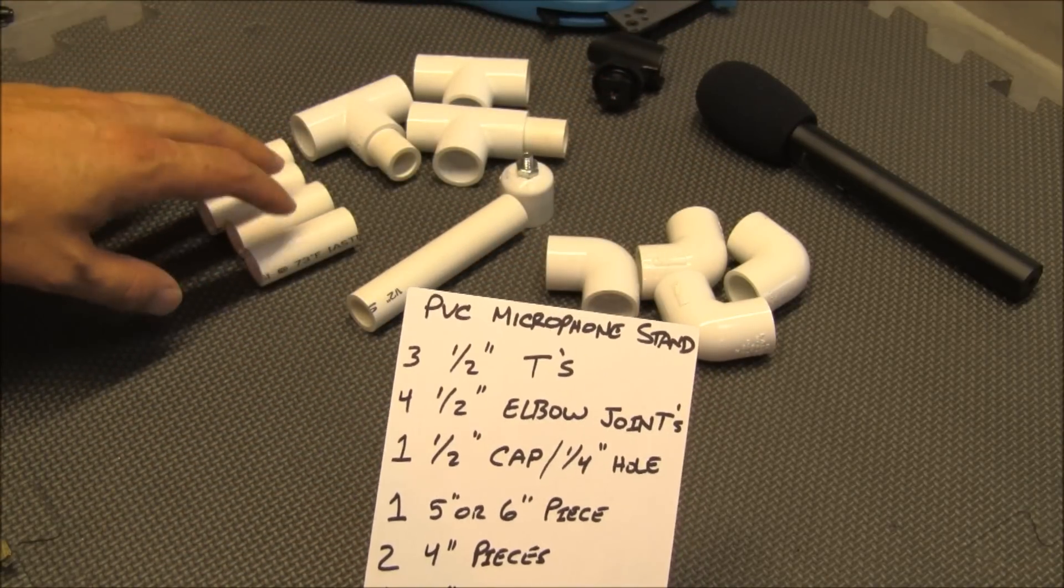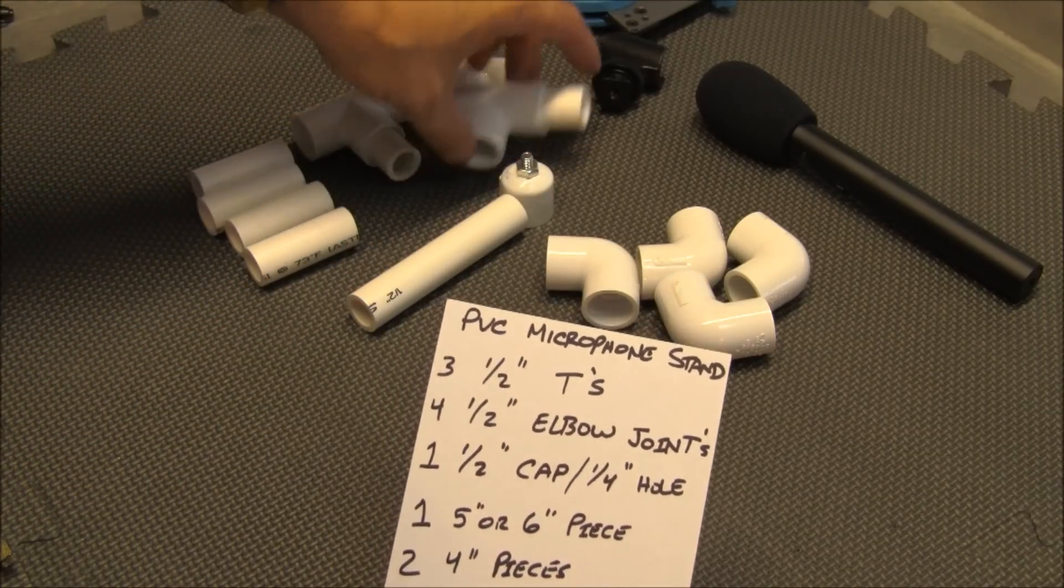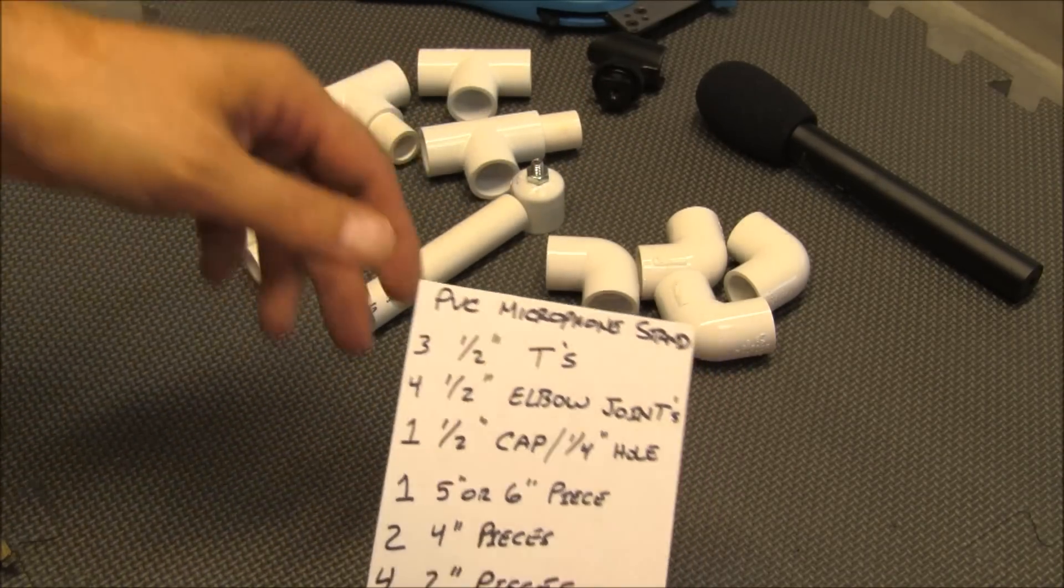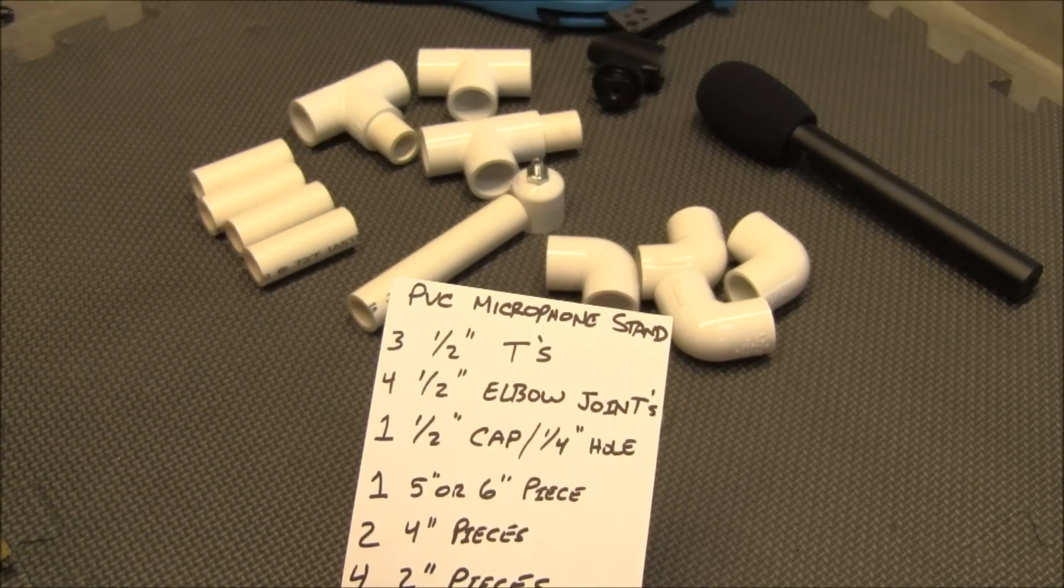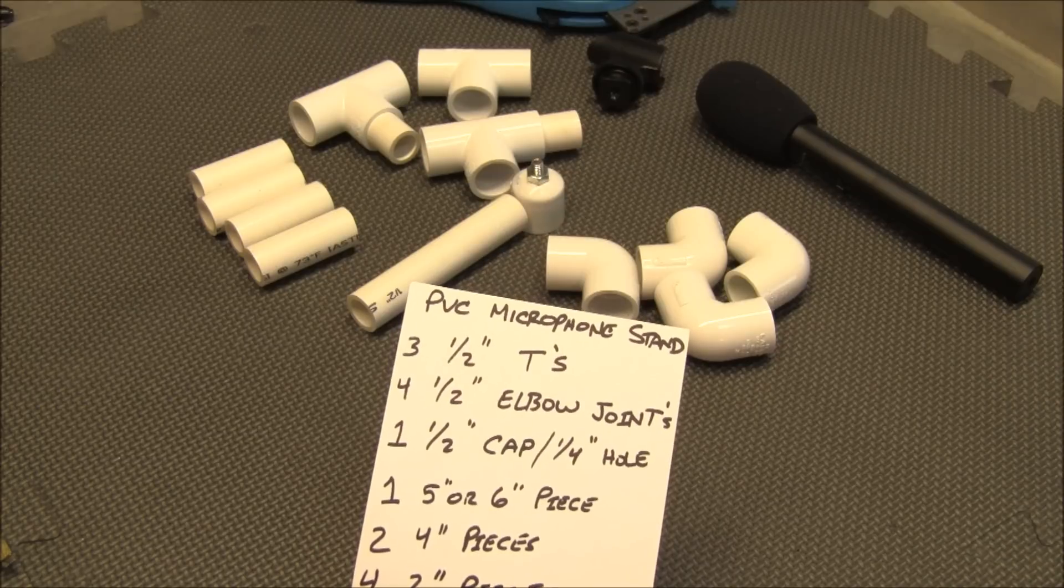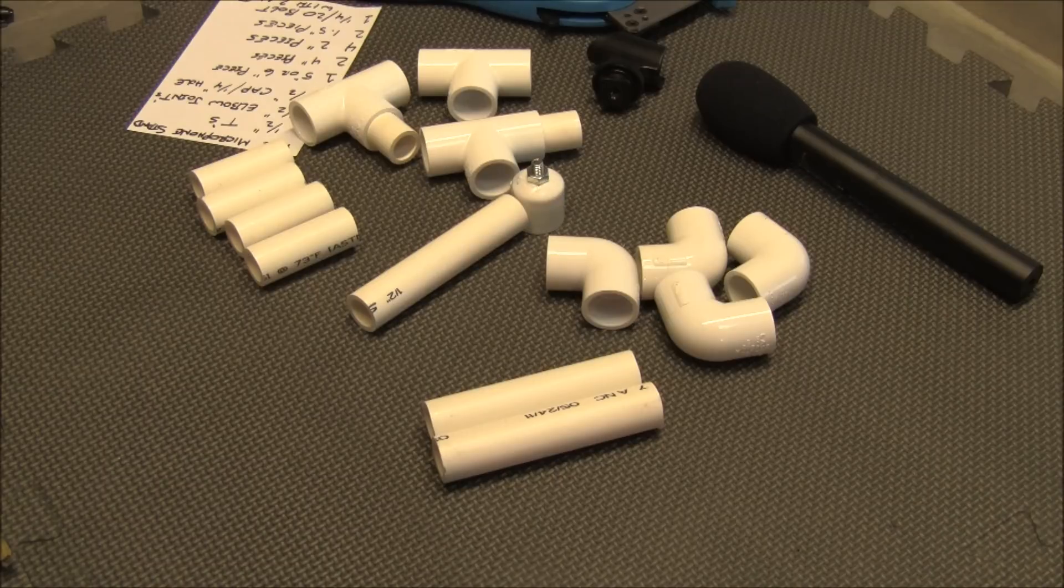You're also going to need four 2 inch pieces and then two 1.5 inch pieces, and that's what's stuffed inside the tees. Then your quarter inch by 20 threaded bolt with two nuts, and with those things you should be able to build a microphone stand. That's what I'm going to do.